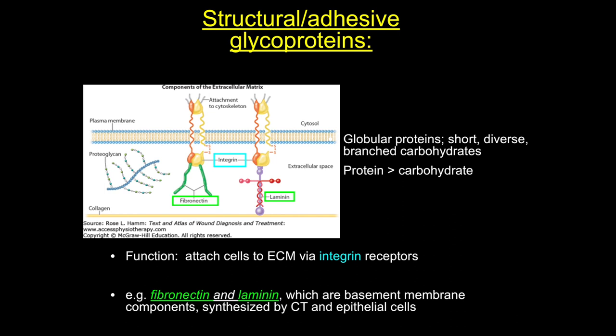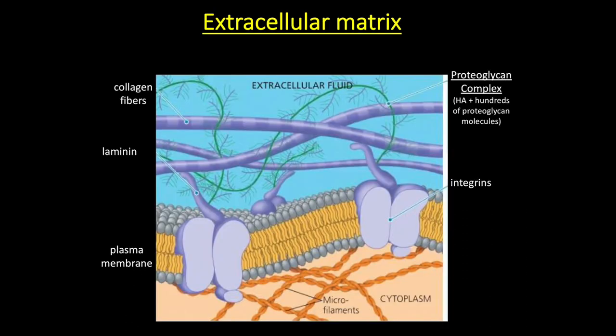Laminin is located only at the basal lamina, and one of its functions is to link collagen through integrins to the epithelial cell membrane. This cartoon summarizes the components of the ECM and how they interact. Given this intricate structure, it's not surprising that many pathologies result from defects or loss of any of these components. One way to deepen understanding is to make a chart of potential outcomes for loss or mutation in each component.